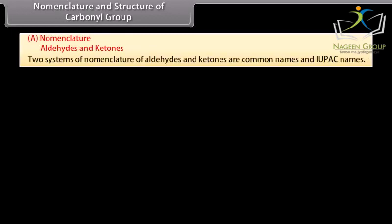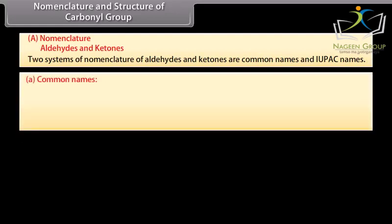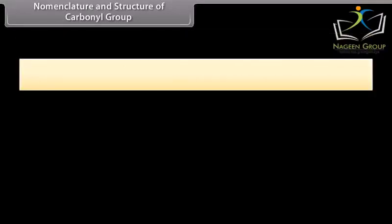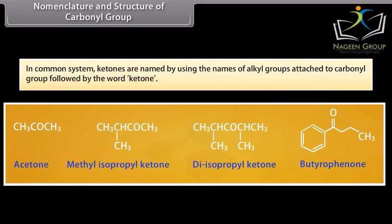Nomenclature and structure of carbonyl group. Two systems of nomenclature of aldehydes and ketones are common: common names and IUPAC names. The common names of aldehydes are derived from the names of the corresponding carboxylic acids by replacing the suffix '-ic acid' with '-aldehyde'. Position of substituents in the aldehyde chain, if any, is indicated by Greek letters alpha, beta, gamma, and delta. The alpha carbon is one which is directly attached to the aldehydic group. In the common system, ketones are named by using the names of alkyl groups attached to the carbonyl group followed by the word 'ketone'.